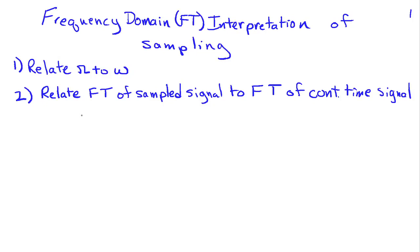In this lecture, we're going to develop a frequency domain interpretation of sampling using the Fourier transform, and we're going to do two objectives. One is to relate the continuous time frequency, capital Omega, to discrete time frequency, lowercase omega, and the second is to relate the Fourier transform of the sampled signal to the Fourier transform of the continuous time signal. This will be our workhorse for analyzing sampling and learning about how we do reconstruction.